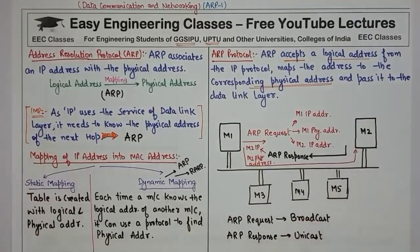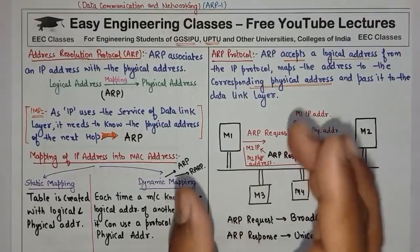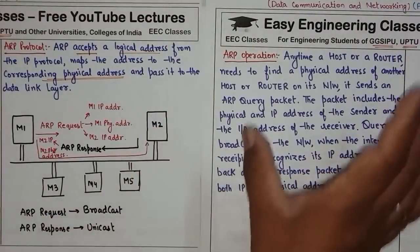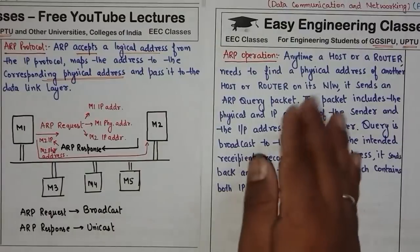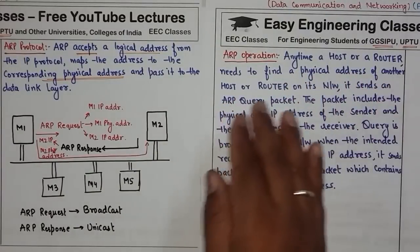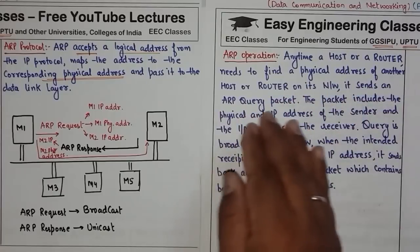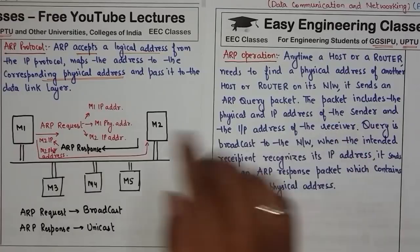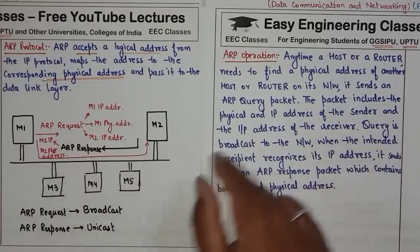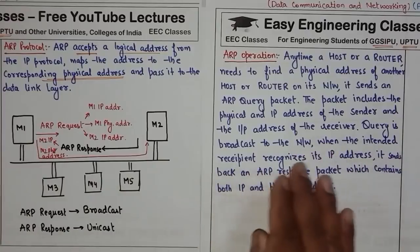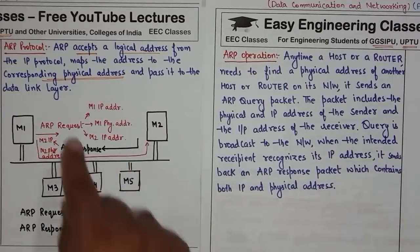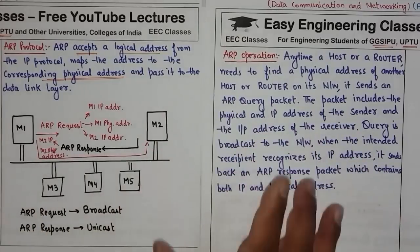This is how the ARP protocol works. If you have a question about ARP, you can draw this diagram and explain the working. The theory states: anytime a host or router needs to find the physical address of another host or router on its network, it sends an ARP query packet. The packet includes the physical and IP address of the sender and the IP address of the receiver. The query is broadcast to the network. When the intended recipient recognizes its IP address, it sends back an ARP response containing both its physical and IP address.